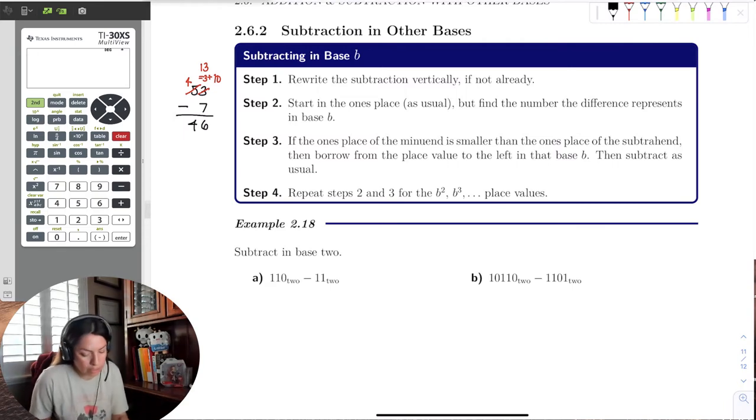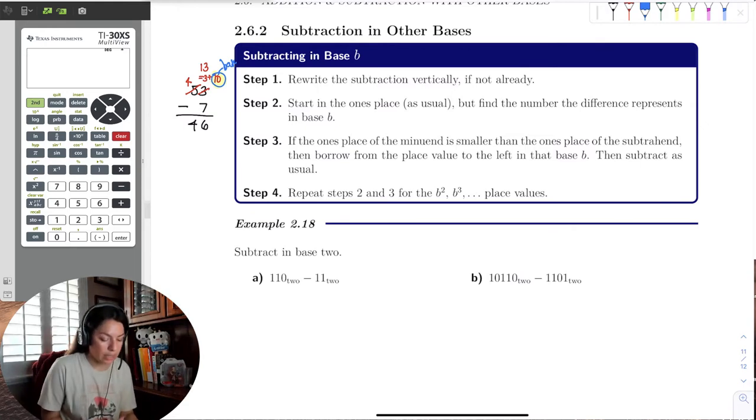Let's focus on this. I can borrow whatever I want, but I'm borrowing the base, and that's what the subtraction says, this process. It says right here, just write it vertically, start subtracting, and when that top number is smaller than the bottom one, borrow from the next place value and add the base to that value in the place value that you're subtracting.